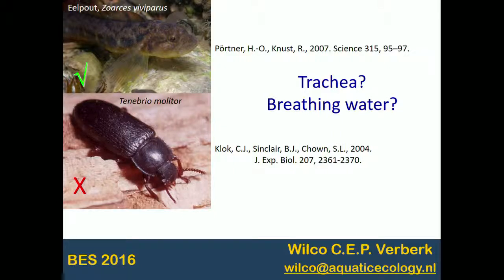An obvious candidate explanation: one would be that maybe the animals have a different mode of breeding — insects have trachea, so they breed quite differently from fish. The other explanation could be that it's to do with the medium they're in to take up oxygen. My approach would be to combine that and look at aquatic insects and see how they respond to temperature and oxygen.